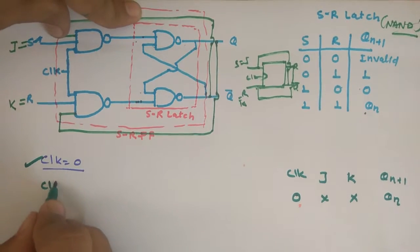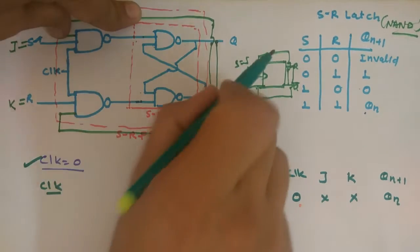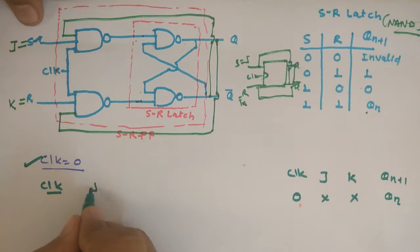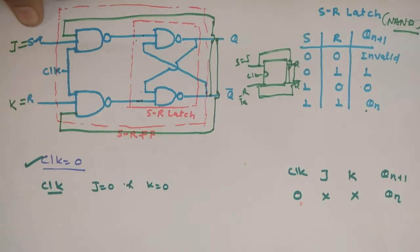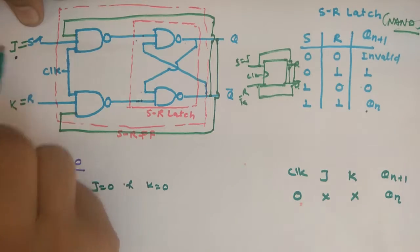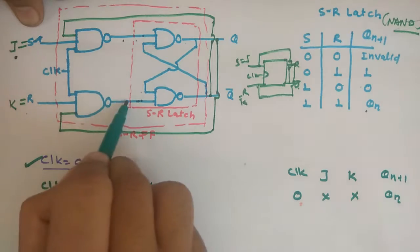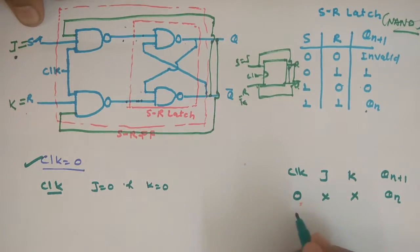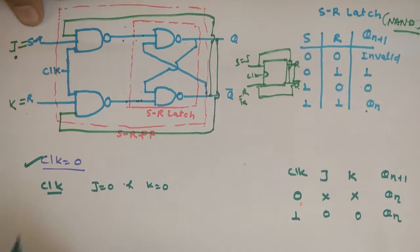When clock is one, we have four conditions. When J is equal to 0 and K is equal to 0 — when this is zero, zero into something will be 1 and zero into something will be 1, so 1 and 1 will give the same condition — that means when clock is 1 and both J and K are 0, the output will also be Qn only.